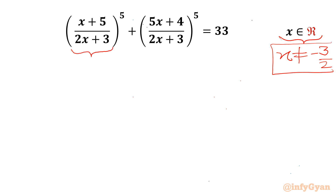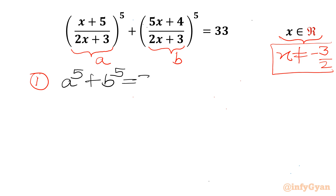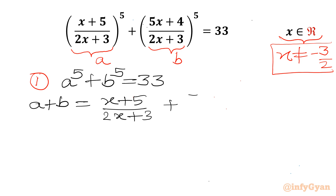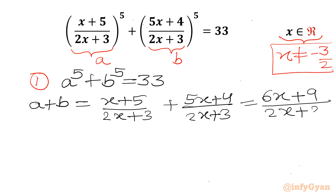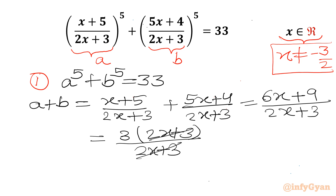Now I will use substitutions. This bracket I will call a, and this bracket is b. So the very first equation we can write is a⁵ + b⁵ = 33. Now let's check the value of a + b. It would be (x+5)/(2x+3) + (5x+4)/(2x+3), which gives 6x+9 over 2x+3. Since 3 is common from the numerator, we get 3(2x+3)/(2x+3), which cancels to 3. So our second equation is a + b = 3.